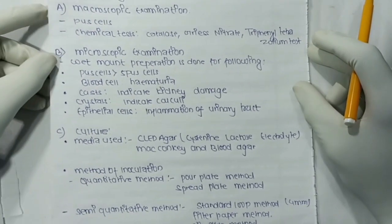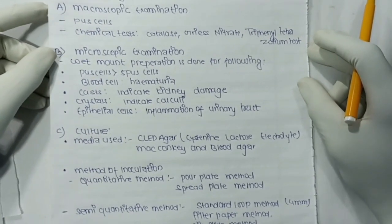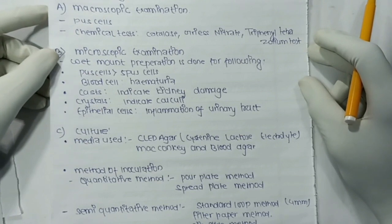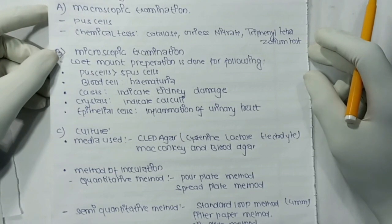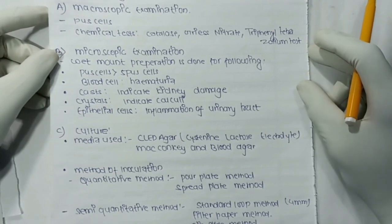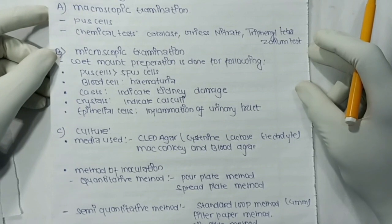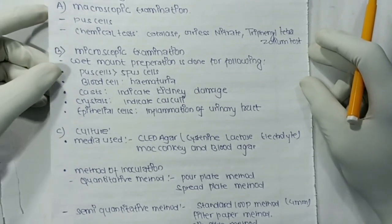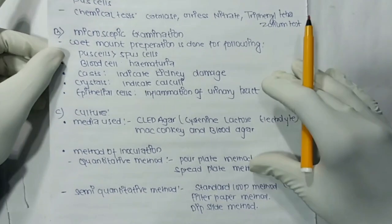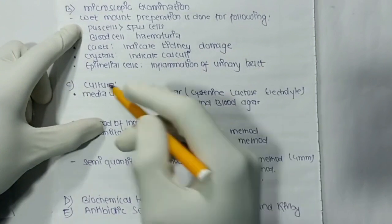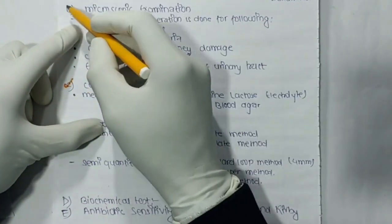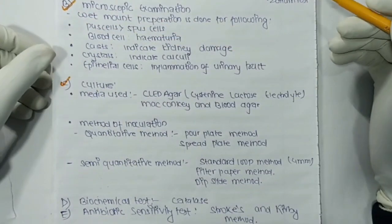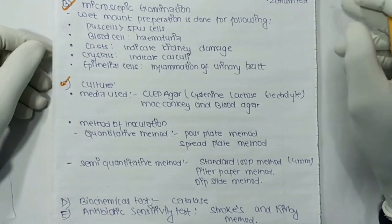Microscopic examination includes wet mount preparation. In normal cases, fewer than five pus cells are seen. More than five pus cells represent pyuria. Blood cells represent hematuria. Cast cells represent kidney damage. Crystals indicate calculi. These findings indicate inflammation of the urinary tract.